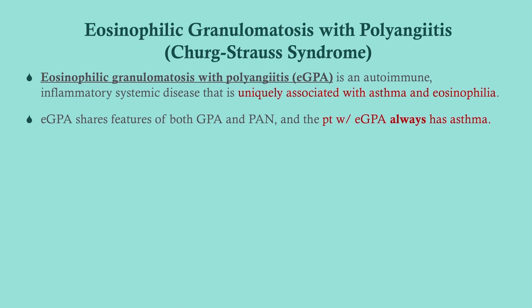Eosinophilic granulomatosis with polyangiitis — formerly called Churg-Strauss, now called EGPA — is similar to GPA in many respects. The thing that makes EGPA stand out is that these patients always have asthma, either currently diagnosed or by history, and they always have eosinophilia. If you get a CBC, you'll see eosinophilia. It shares some features with both Wegener's and polyarteritis nodosa, but the patient with EGPA always has asthma.